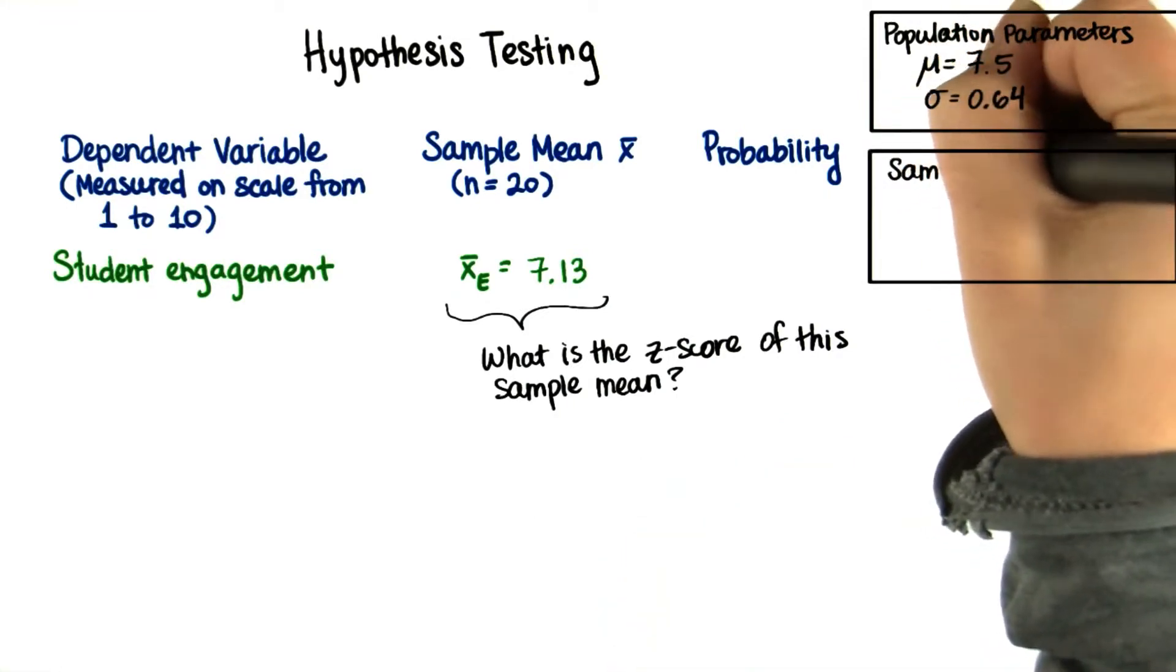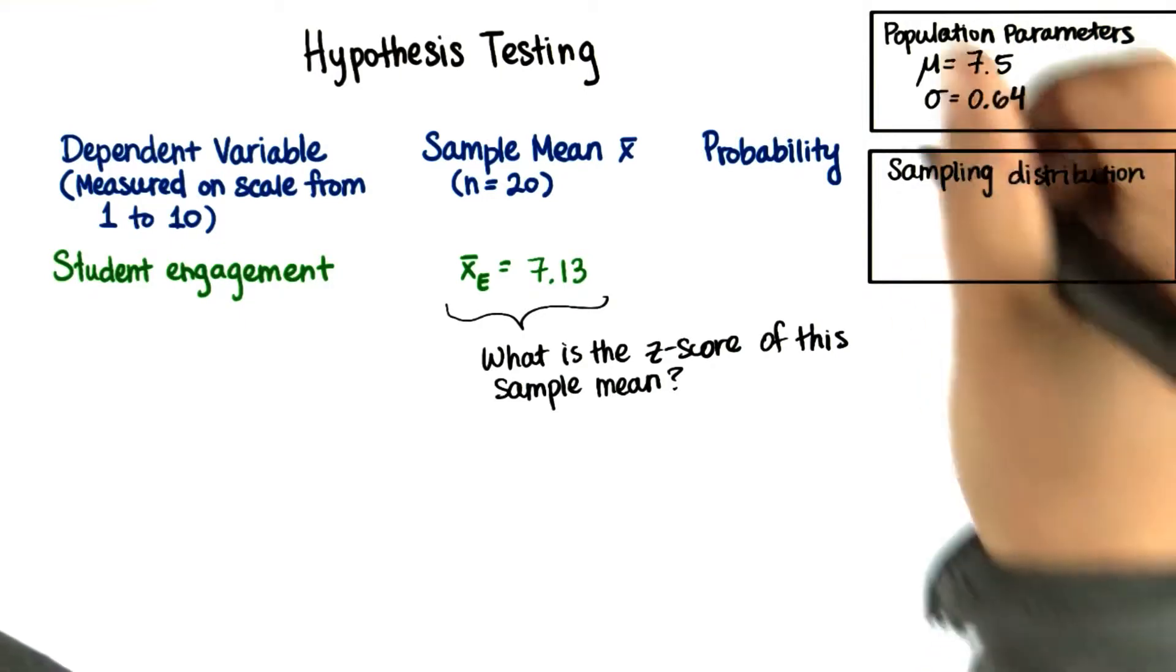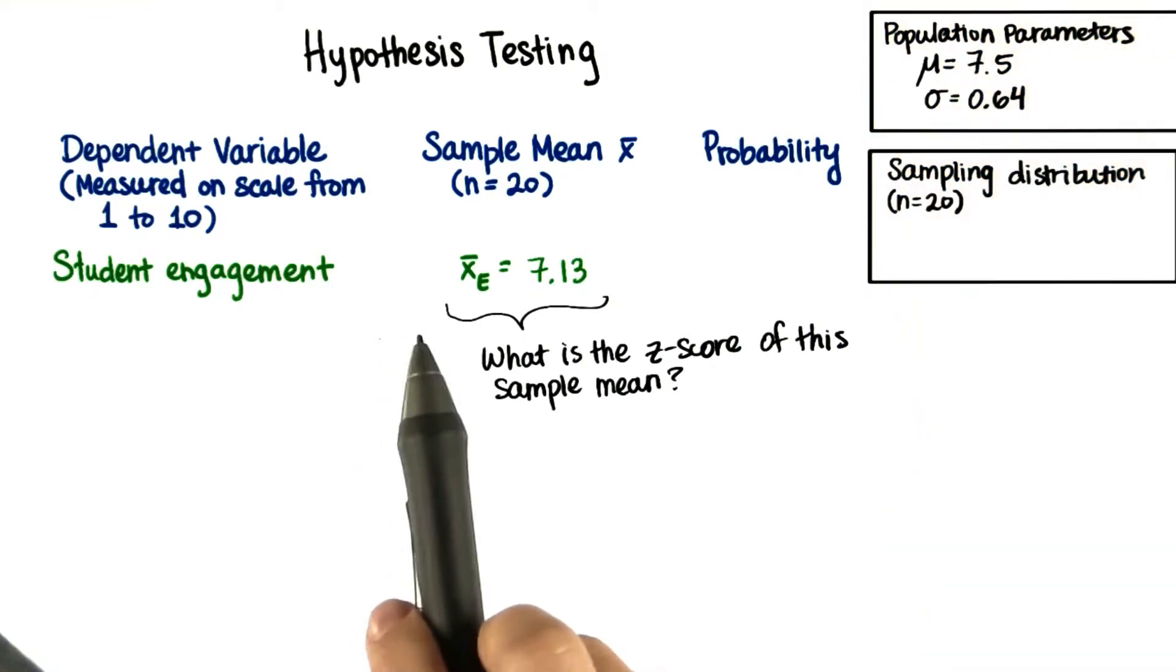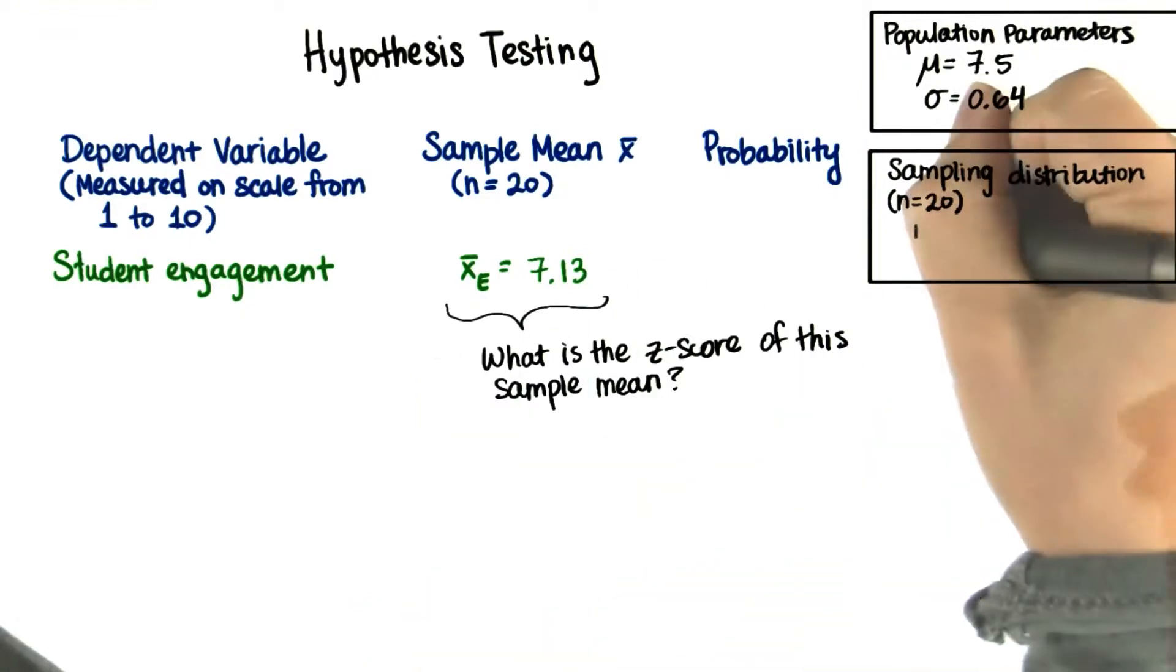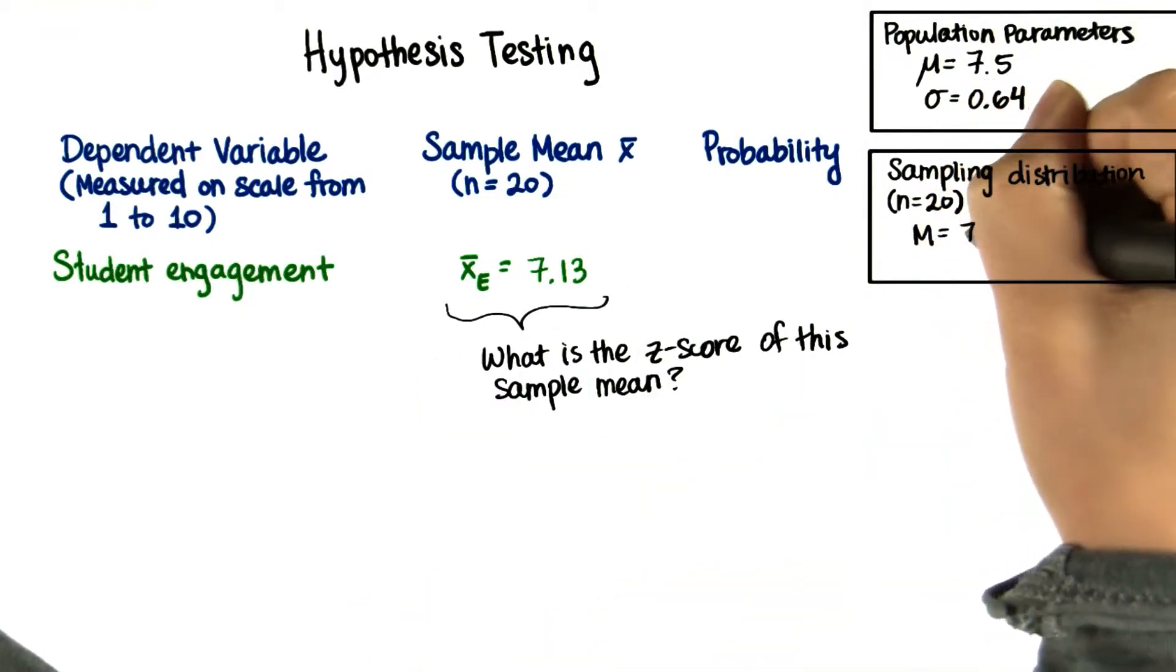So for the sampling distribution, where we take all samples of size 20, because in this case our sample consisted of 20 students, we have that the mean is the same as the population mean.